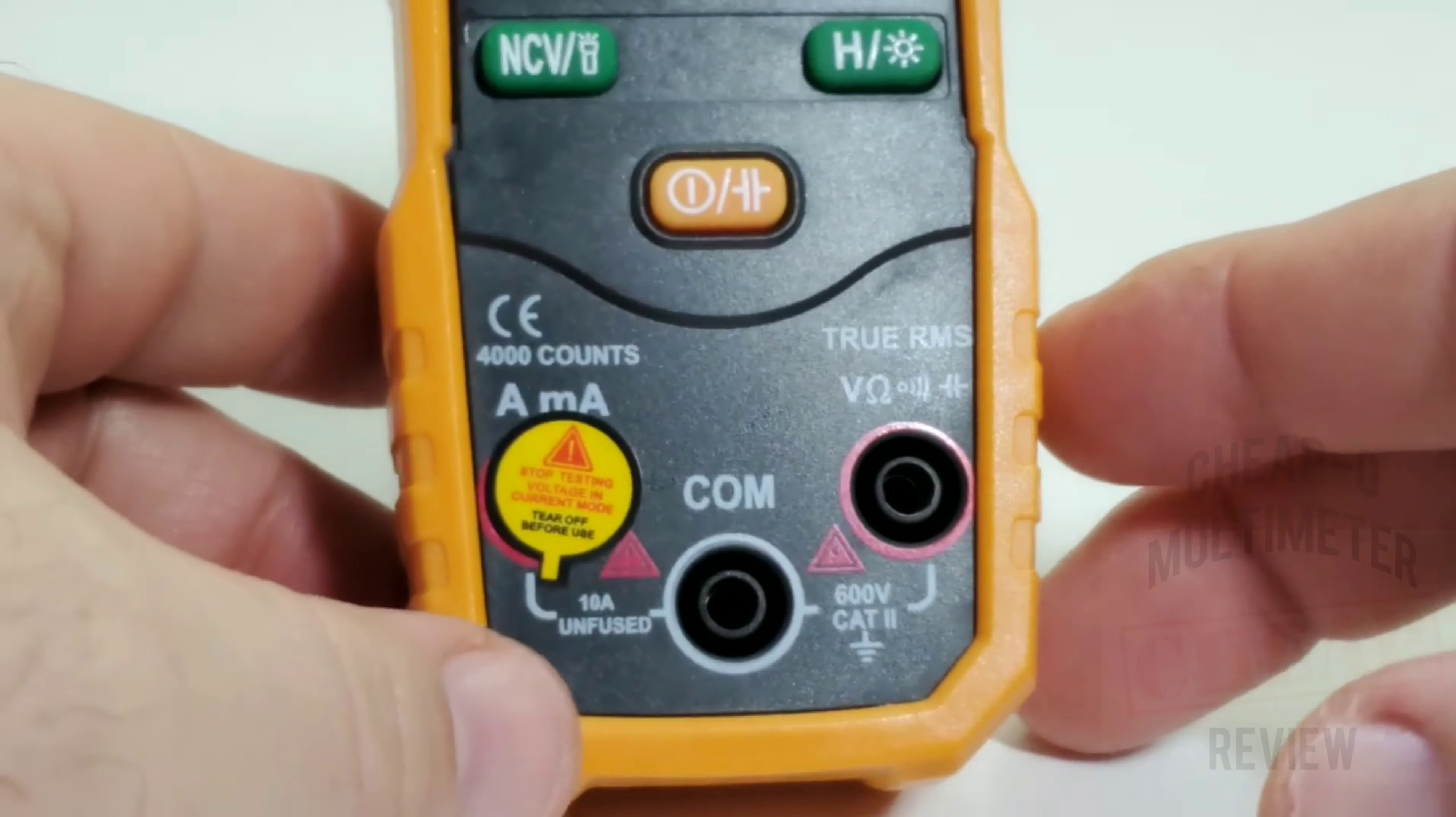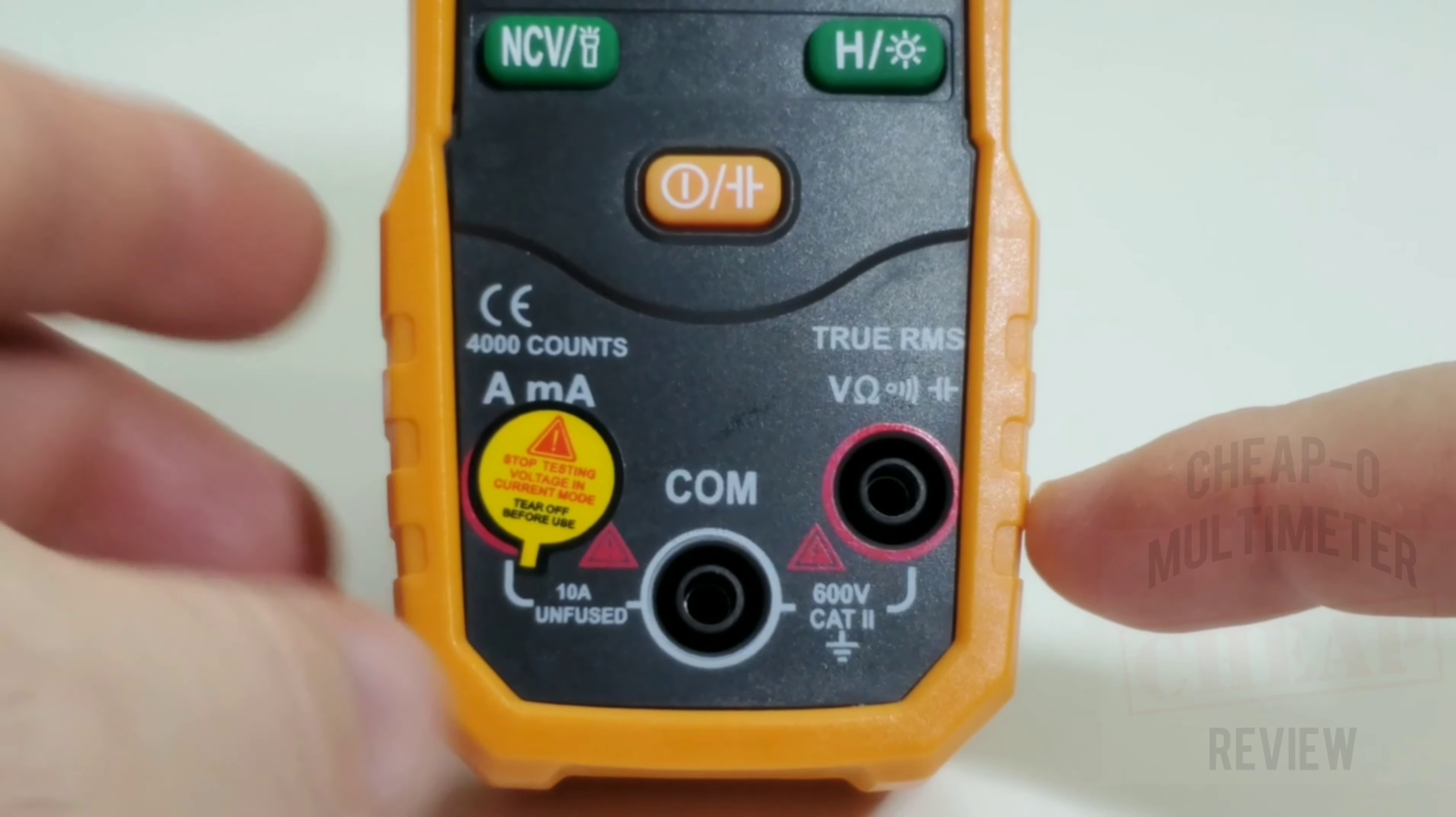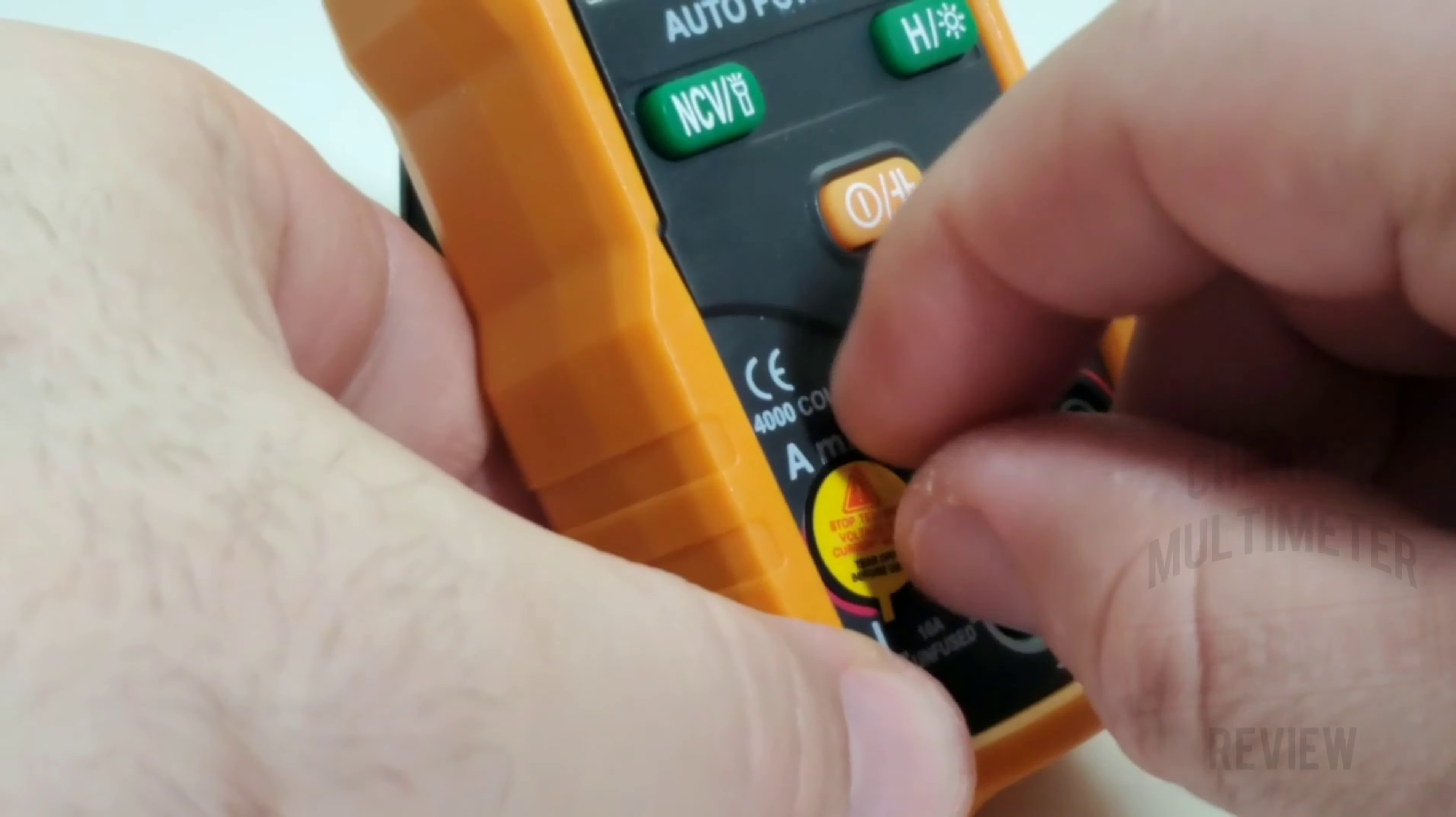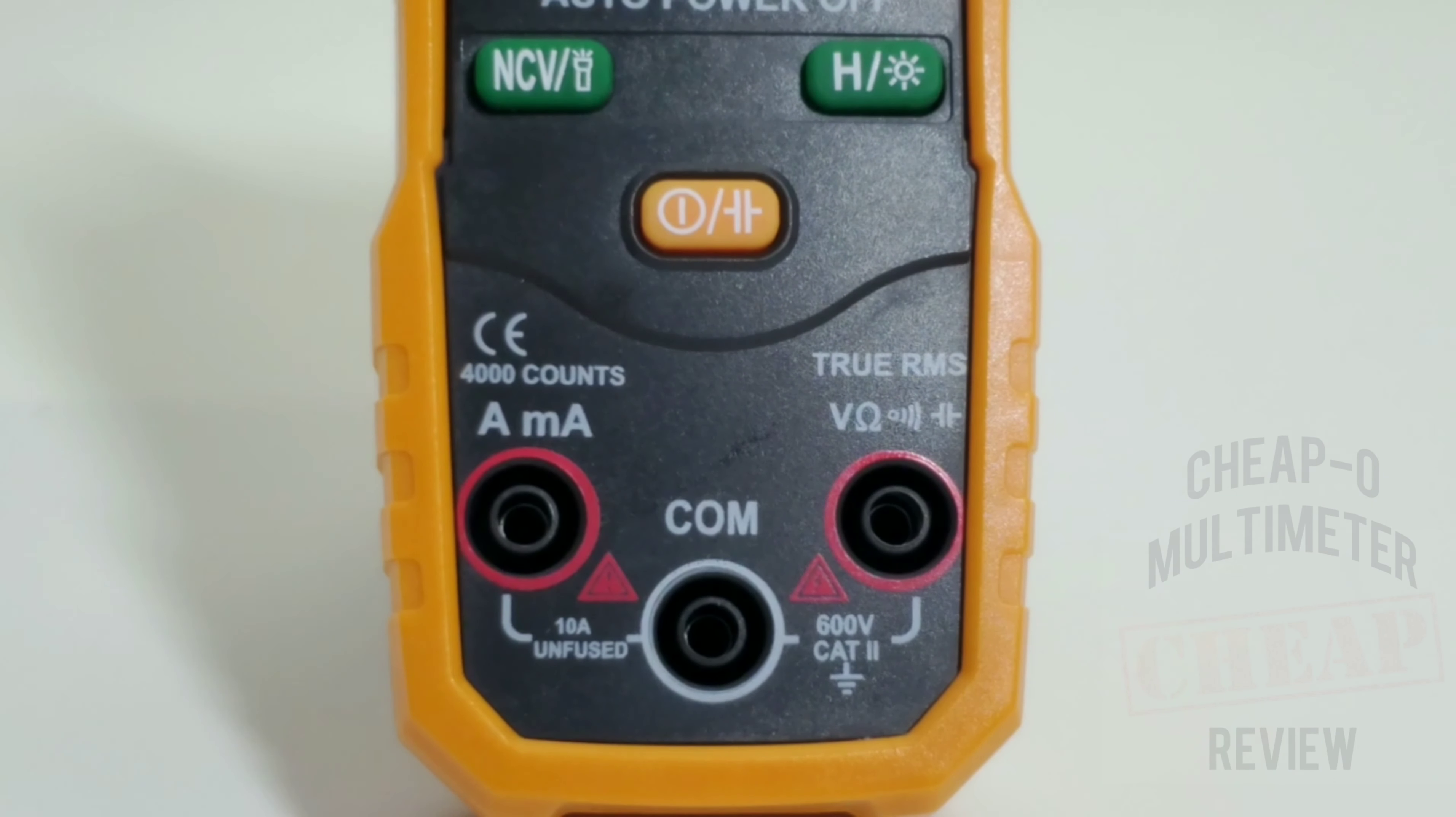At the bottom we have three input terminals. We have the volts resistance continuity and capacitance, middle we have our common, and on the left we have our current in milliamps. Let's take off our little warning label as we have been forewarned, thank you. And yeah looks like we are ready.